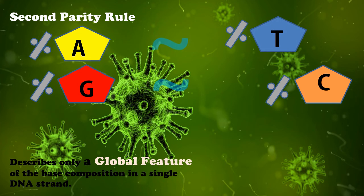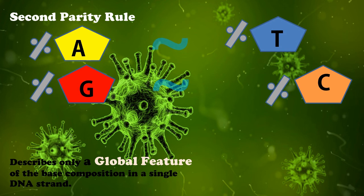A always pairs with T and G always pairs with C because of compatibility issues in making hydrogen bonds. The first parity rule applies to eukaryotic chromosomes, bacterial chromosomes, double-stranded DNA viral genomes, and RNA chromosomes. It does not apply to organelle chromosomes like mitochondria and plastids with DNA smaller than 20 to 30 kbp, nor to single-stranded DNA or any type of RNA genome. In those cases, the second parity rule applies. Both rules are important to understand when applying them to double-stranded or single-stranded DNA.